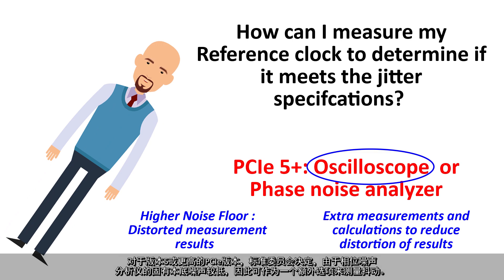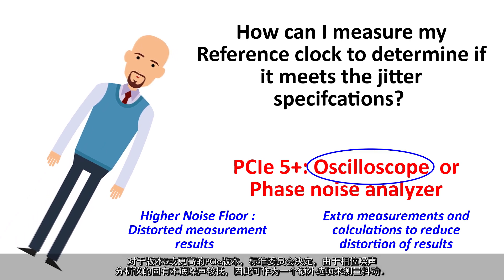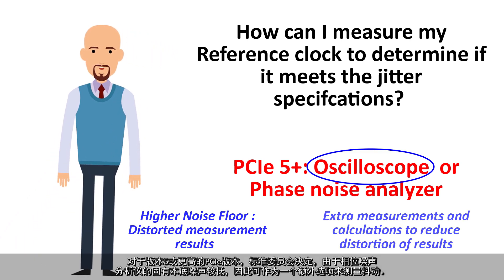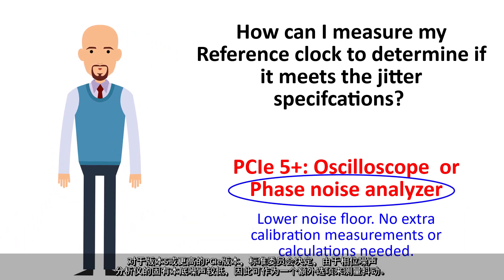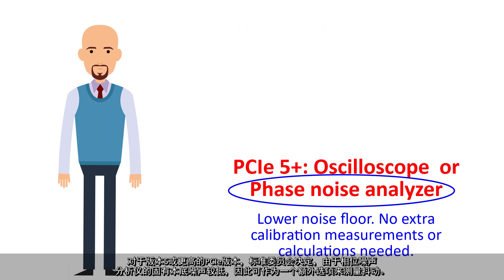For PCIE version 5 and beyond, the Standards Committee decided that because of the inherently lower noise floor of phase noise analyzers, they too should be an additional available option for measuring the jitter.